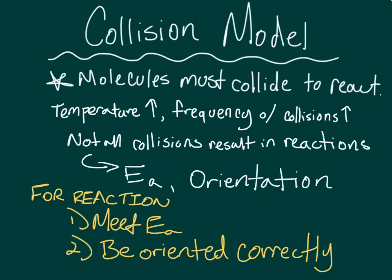The collision model is a model that attempts to explain how reactions occur. The basic premise is that molecules must collide in order to react. Similar to the kinetic molecular theory of gases, the collision model finds that an increase in temperature leads to an increase in the average velocity of particles, which leads to an increase in the frequency of collisions. However, not all collisions result in reactions. In the 1880s, Svante Arrhenius postulated that a certain threshold of activation energy is necessary for two particles who are colliding to form a product. Even when a collision meets the activation energy, sometimes a reaction won't occur because of orientation — two molecules must be oriented correctly to form a new bond. So for a reaction to occur, first the activation energy needs to be met, and second the particles must be oriented correctly.